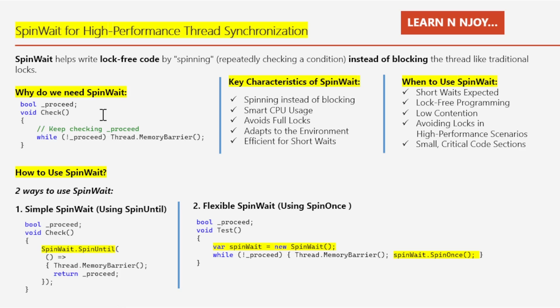Now we understand the problem — so how does SpinWait fix this? SpinWait solves these problems in two key ways. Number one: it limits the spinning time. After a set number of spins, it stops aggressively checking and gives up the CPU using methods like `Thread.Yield` or `Thread.Sleep`, so other threads get a chance to work. Number two: on a single-core machine, it knows to be extra cautious and yields more often to avoid blocking critical tasks.